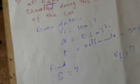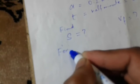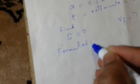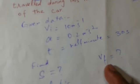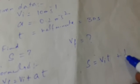For final velocity, we will solve using the first equation of motion: vf equals vi plus at. For distance, we will use the second equation of motion: s equals vi·t plus half·a·t squared.